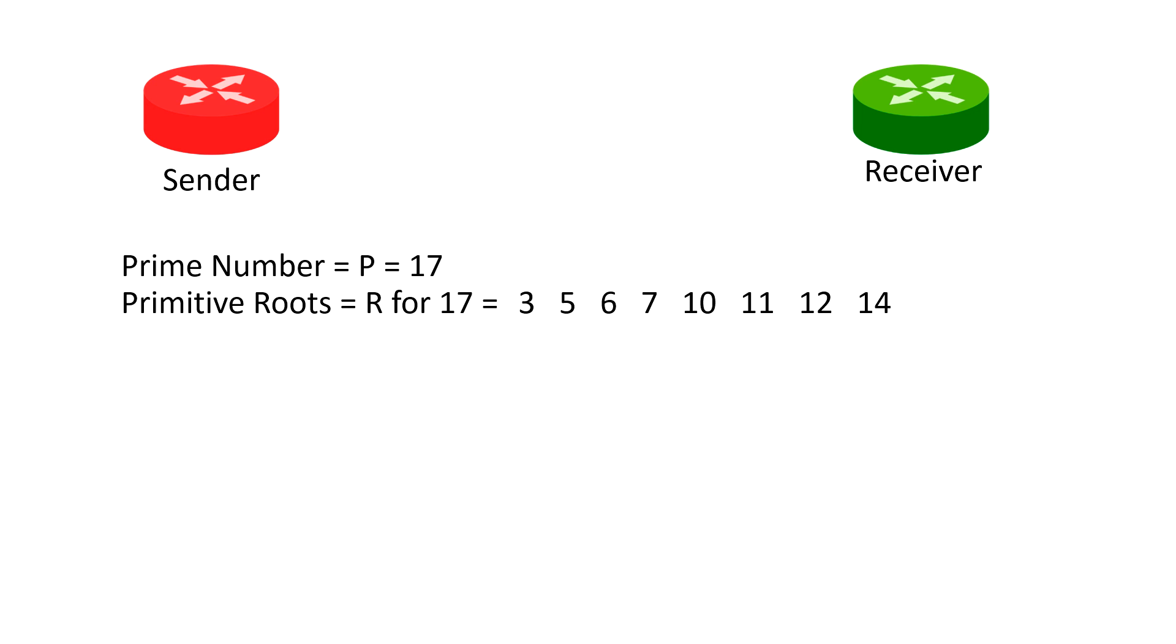Sender chooses its prime number randomly which has many primitive roots as shown in the screen. This sender chooses any number from these primitive roots randomly and let's say it has chosen number 3. As base formula which is R mod P is now it becomes 3 mod 17. This base 3 mod 17 is sent to the receiver end as well. After this they have same base as 3 mod 17.